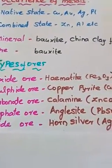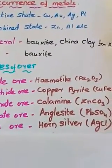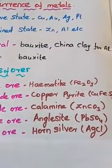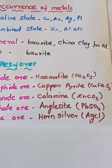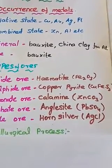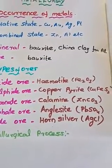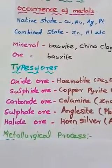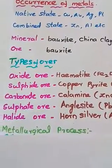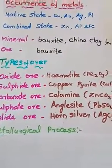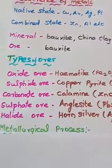Copper calamine, anglesite, and horn silver are examples of carbonate ore, sulfate ore, and halide ore respectively.